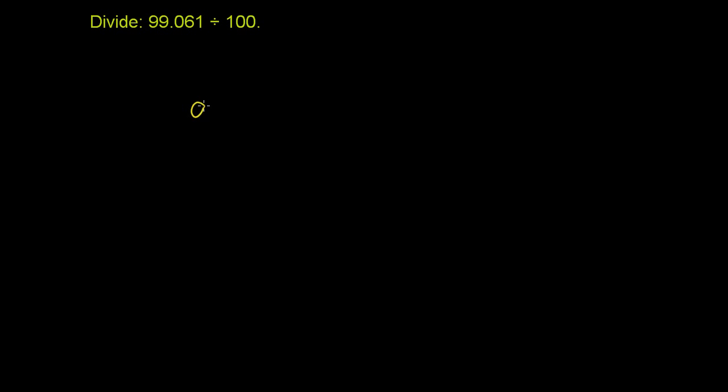If I have 99.061, if I multiply by a power of 10, I'm going to make the number bigger. Every time I multiply by 10, the decimal would shift to the right by one spot. So 99.061 times 10 is going to be equal to 990.61. Notice, we just moved the decimal over to the right by one.